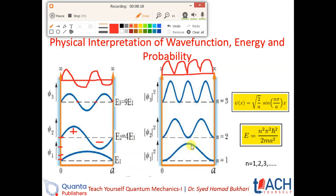For psi 1 probability — probability meaning the probability of finding the particle — if you calculate the probability at the walls, the answer is zero at both walls. This means the probability of finding the particle at the walls is equal to zero. However, the probability is maximum at the center of the well, which is the point x equal to a over 2.